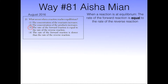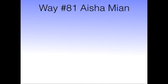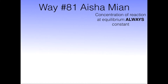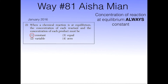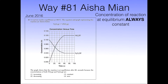Sometimes when equilibrium is brought up on the test, it doesn't mention the rate of the forward reaction. It might ask you about the concentration, which you have to know is always constant. If you take a look at the January 2016 regents, the question asks about the concentration of each reactant, and the answer is choice 1, due to the concentration always being constant.